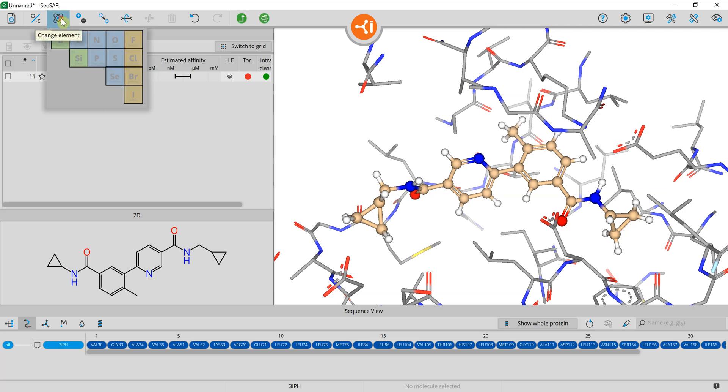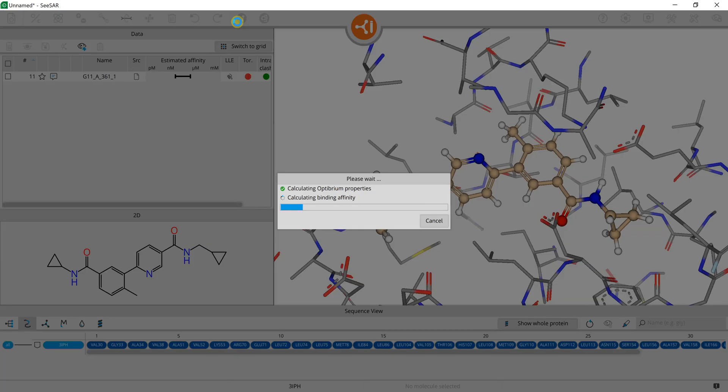After having changed this element, we save our modified ligand to the table and calculate the estimated affinity.